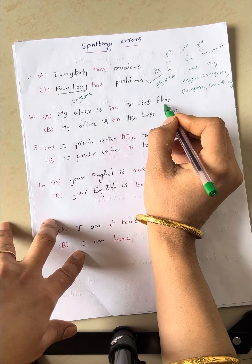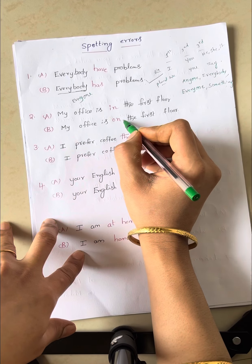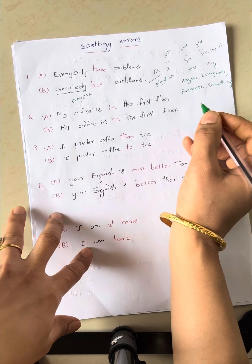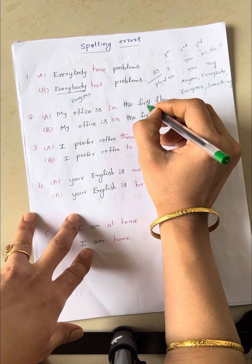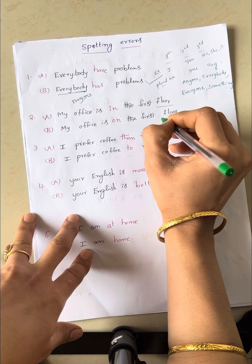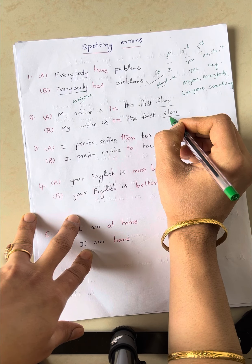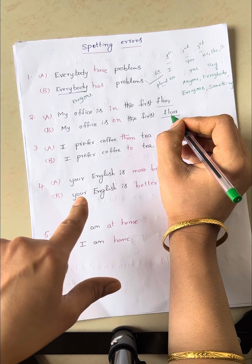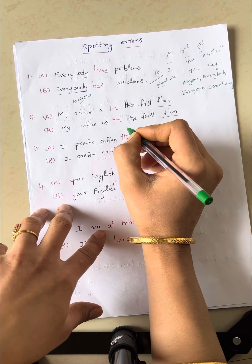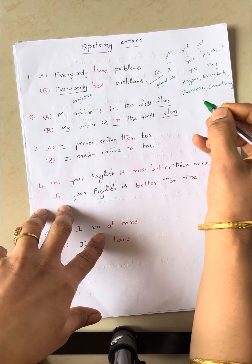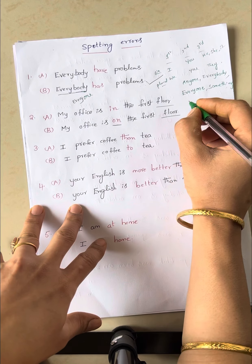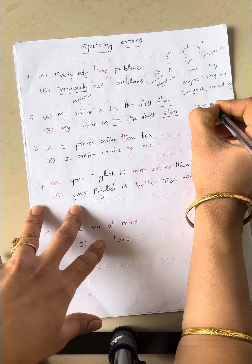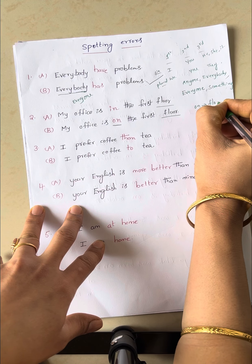My office is in the first floor. My office is on the first floor. Which one is correct? For the floor's point of view, whenever you see floor in the sentence, you use the preposition on. Because for the floor's concept, on is correct.